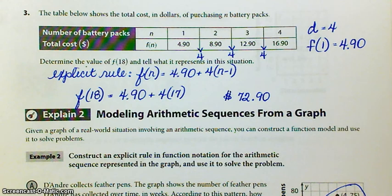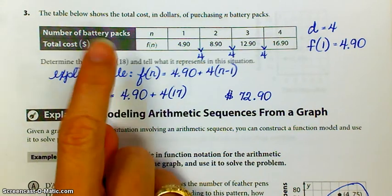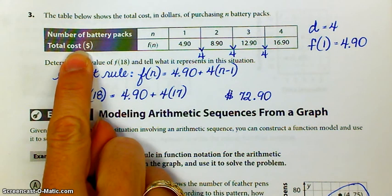All right, I'm on the next page. Number three, the table below shows the total cost in dollars of purchasing n battery packs. So we've got a table: number of battery packs, total cost.